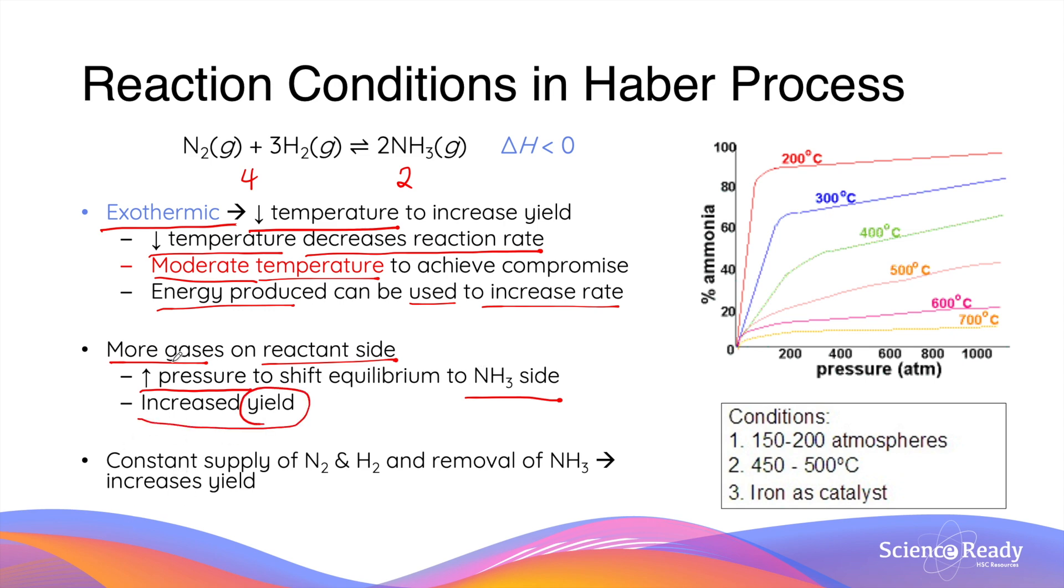In addition to pressure and temperature, the Haber process is usually conducted with a constant supply of nitrogen and hydrogen and a constant removal of ammonia as it's been produced. Both of these considerations will constantly shift the equilibrium of the reaction to the right side to further increase the yield of ammonia.